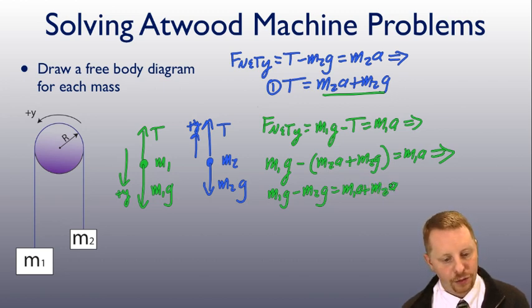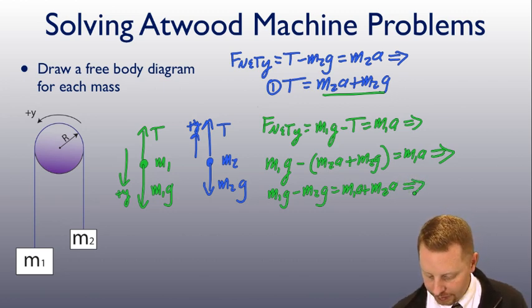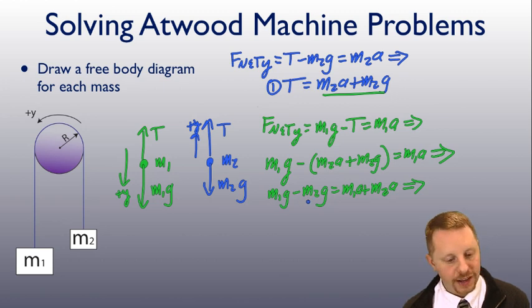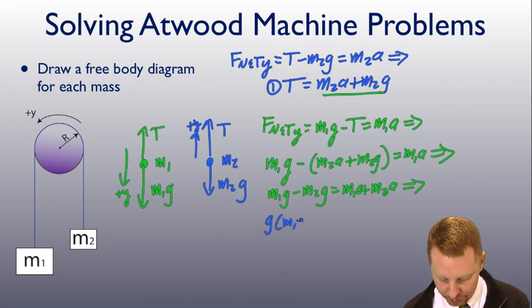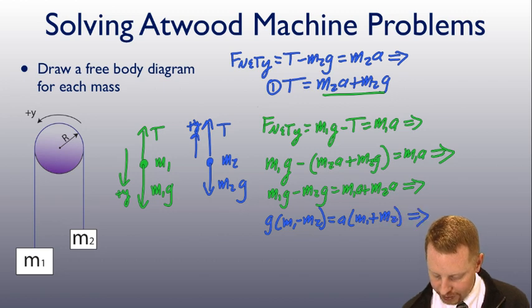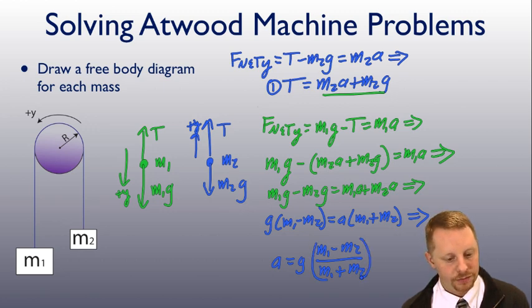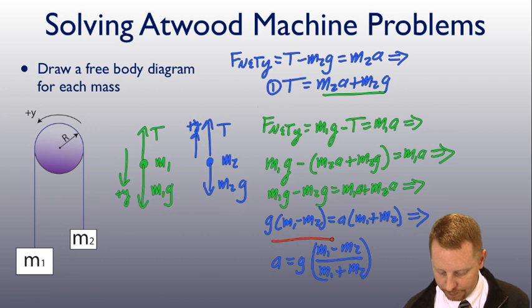What I'm going to do now is rearrange this to solve for the acceleration. So, what I can do here is pull a G out of the left-hand side. G times M1 minus M2 must equal A times M1 plus M2. We're solving for A by itself. A equals G times M1 minus M2 over M1 plus M2. I've solved for the acceleration of the system.